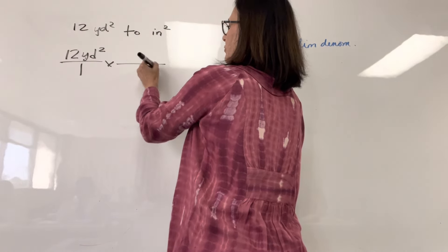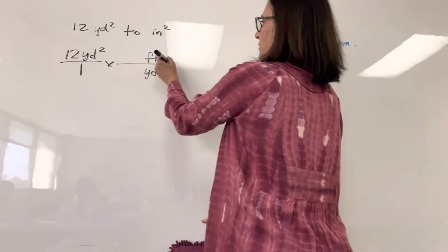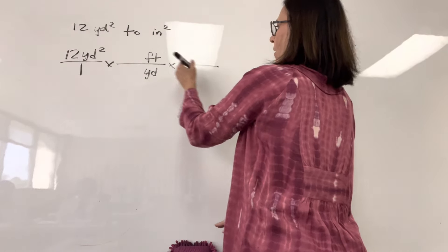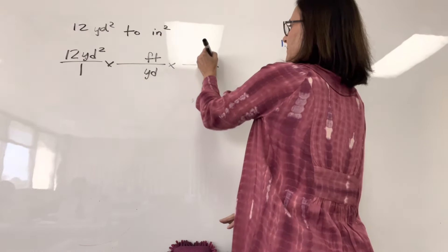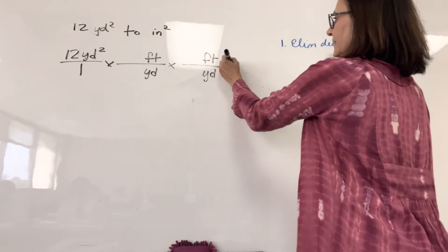All right. So I need two yards to feet. Nope, one yard. Oh, sorry, what you're saying. Right? Multiply by three feet over one yard.